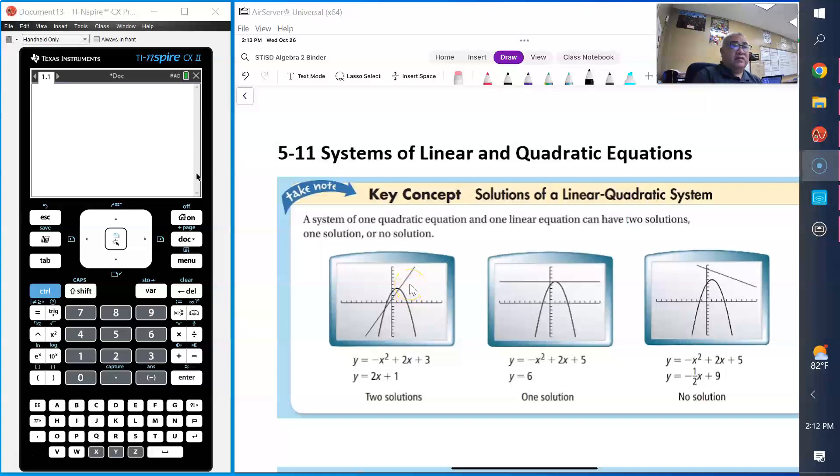The next lesson is solving systems of linear and quadratic equations. There could be three different types of situations: one where the quadratic will intercept the linear in two different places, the quadratic intersects the linear equation at one spot, or they just don't intersect at all. So we could have these three different options.